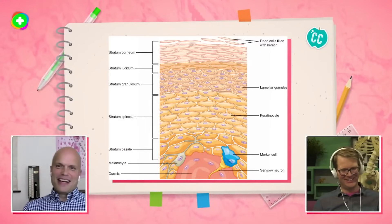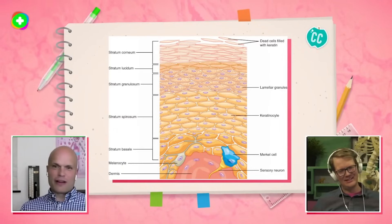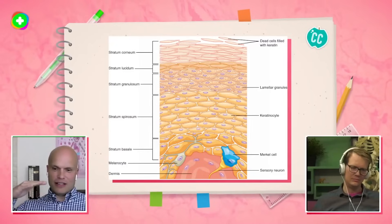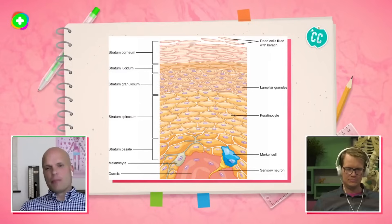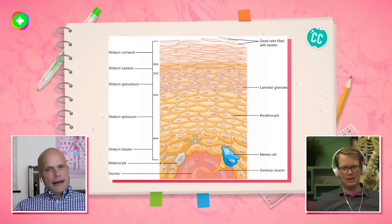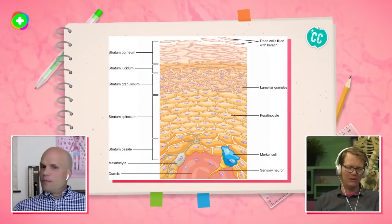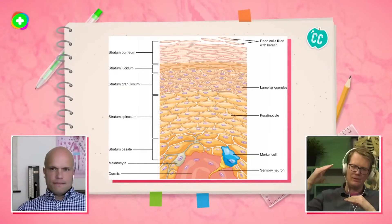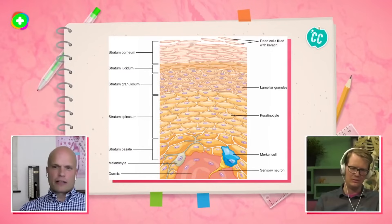The Langerhans cells are free-floating — not attached — so they can move around a little bit. They're mostly found in the dermis and the top of the dermis, right underneath the epidermis. They're staying there; they're not moving up with everything. They're not getting pushed up. It's like a conveyor belt of keratinocytes, but nothing else goes up the conveyor belt.